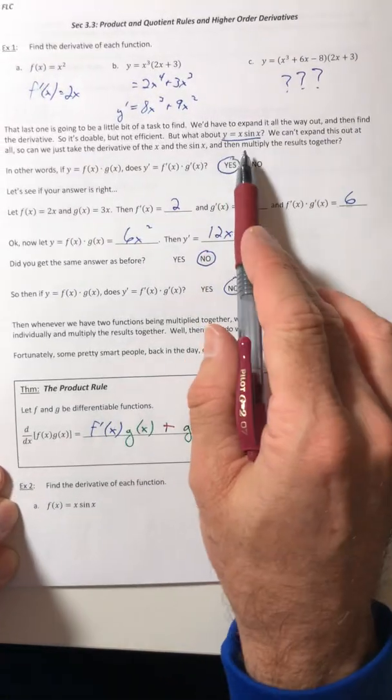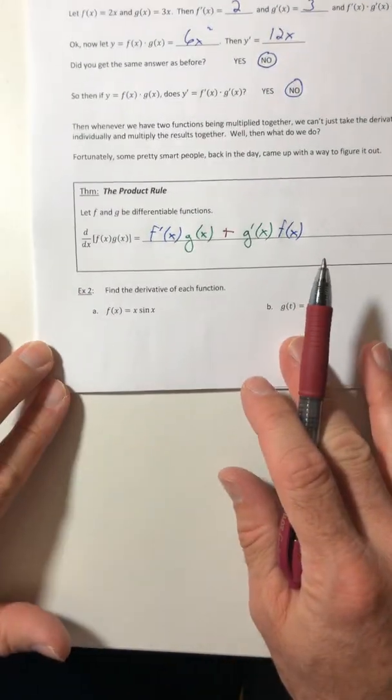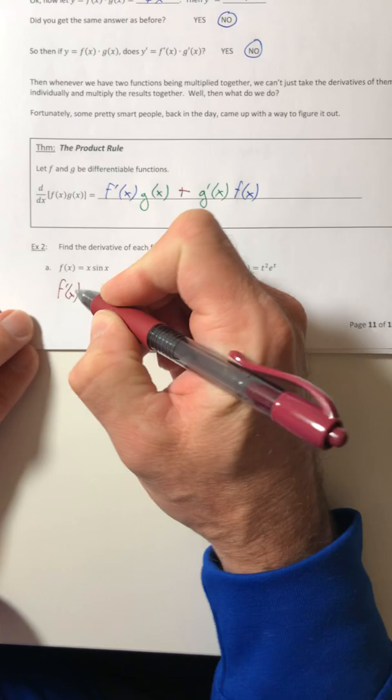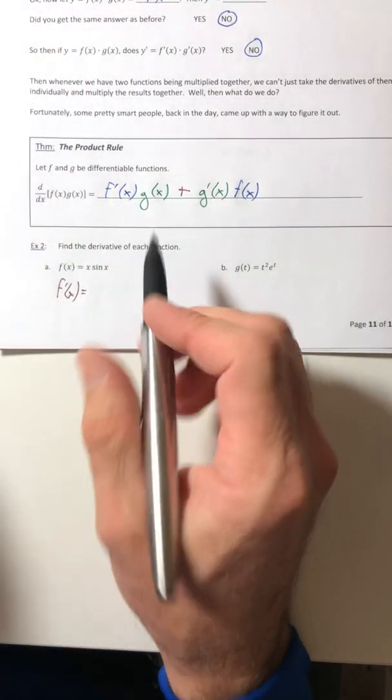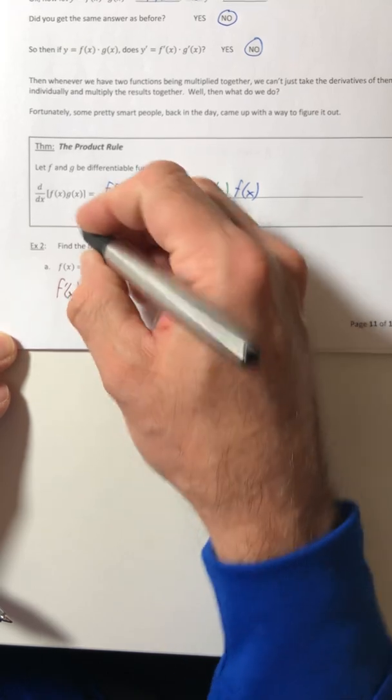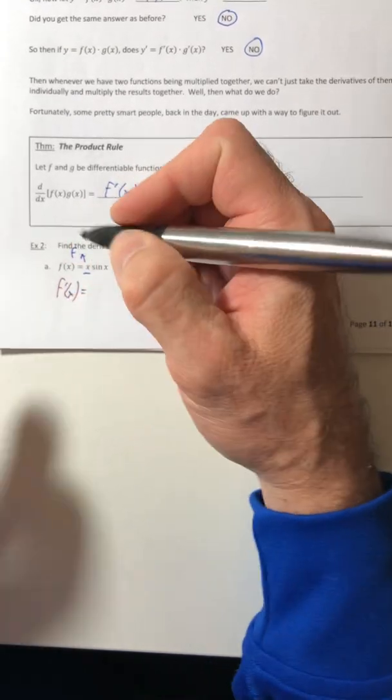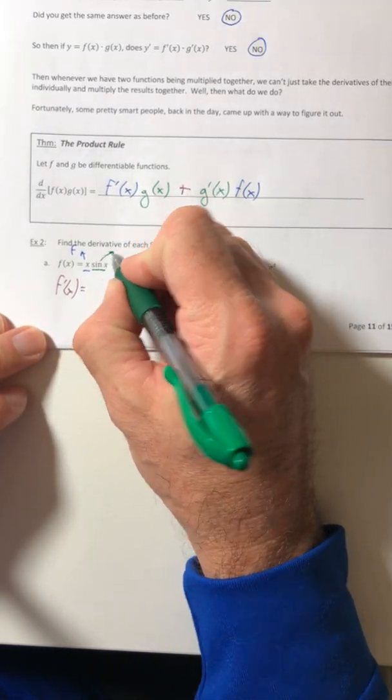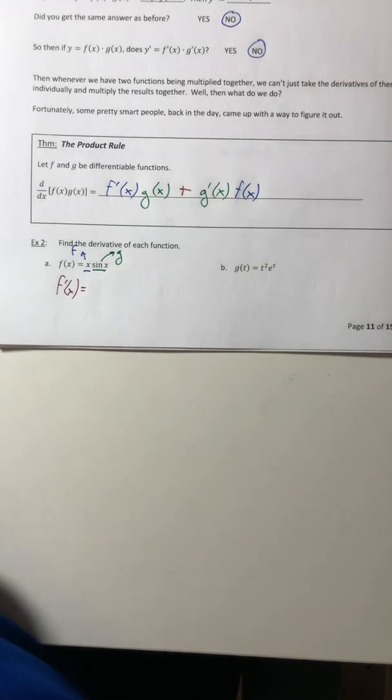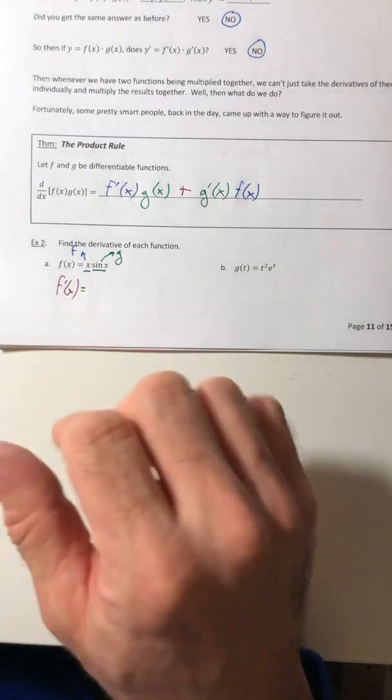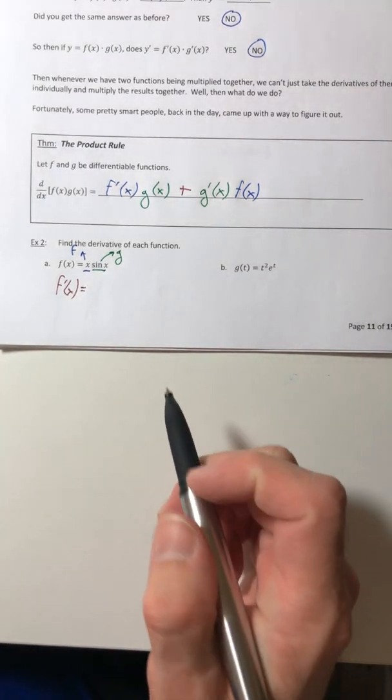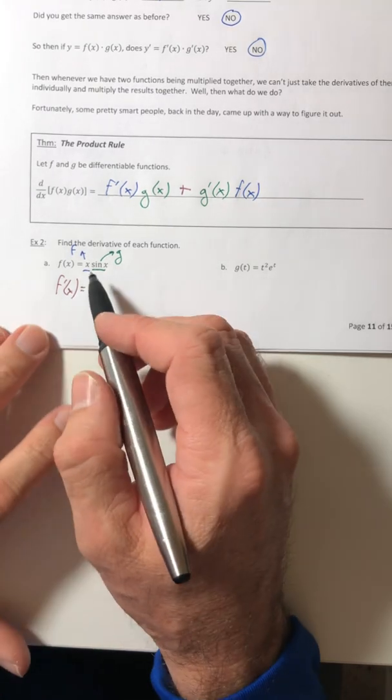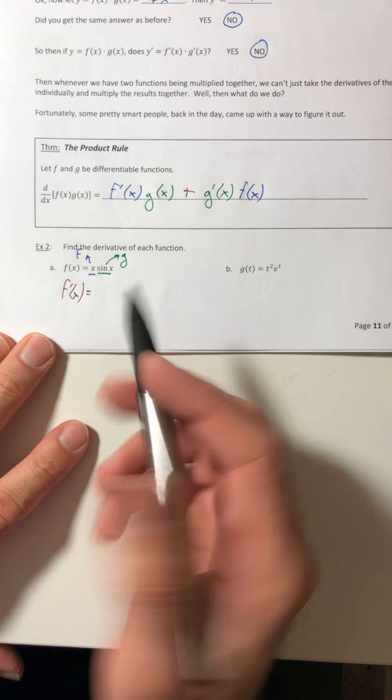All right. So let's try that function out from earlier, x sine of x. So find the derivative of that. Okay, so I got to use my rule. So the first one, the x, that's the f. The sine of x, that's going to be the g. And you can do this if you want. You can kind of underline and kind of highlight, you know, what's what until you start getting used to it. And then it'll just be just kind of going off of rote memory.